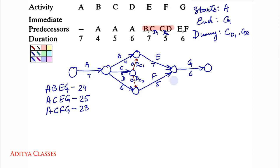Then there is the last path: A, D, F, G. Duration: 7 and 6 — giving 13, and 5 — giving 18, and 6 — giving 24. Let me check once again if there are any paths I have skipped. I have covered all four paths.